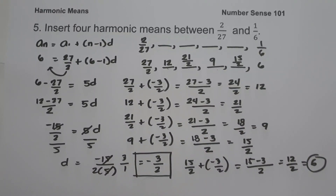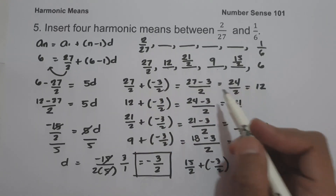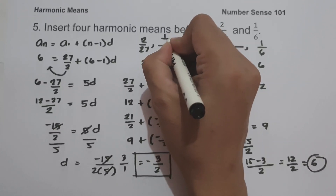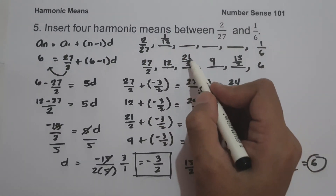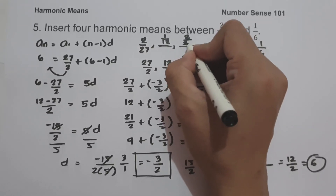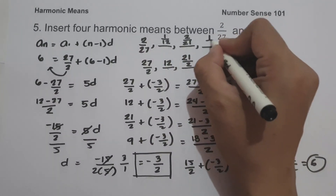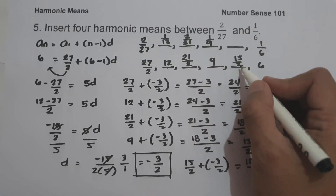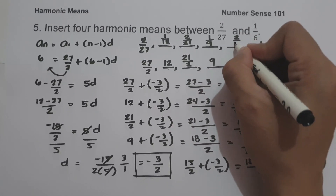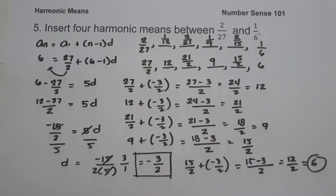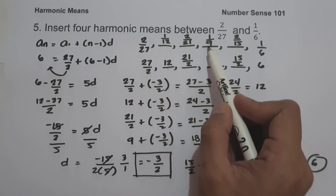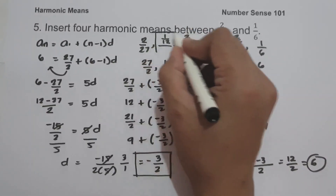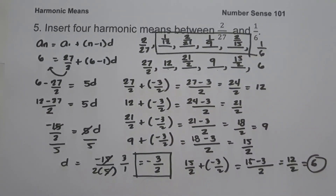To find the 4 harmonic means between 2 over 27 and one over 6, we take the reciprocals: the reciprocal of 12 is one over 12, the reciprocal of 21 over 2 is 2 over 21, the reciprocal of 9 is one over 9, and the reciprocal of 15 over 2 is 2 over 15. So the four harmonic means are one over 12, 2 over 21, one over 9, and 2 over 15. I hope you've learned from this video. Thank you so much for watching, and God bless us all.